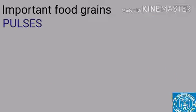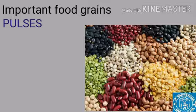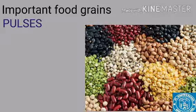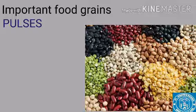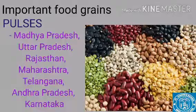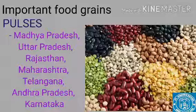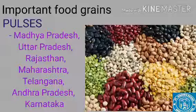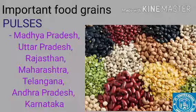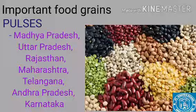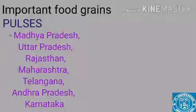The next food grain is pulses — gram, mung, masur, chana, matar, etc., which we call dal. Pulses are grown in parts of Madhya Pradesh, Uttar Pradesh, Rajasthan, Maharashtra, Telangana, Andhra Pradesh, and Karnataka. They are also grown in rotation with other crops and do not require much rain — they can grow in warm and dry weather conditions. This covers the food grains: wheat, rice, maize, millets, and pulses.